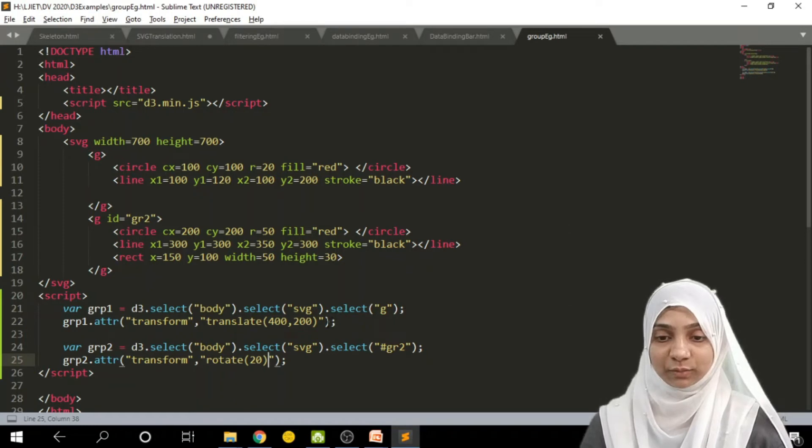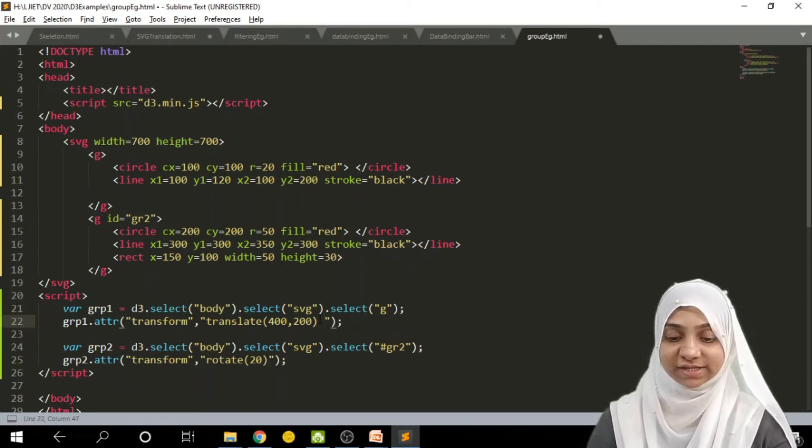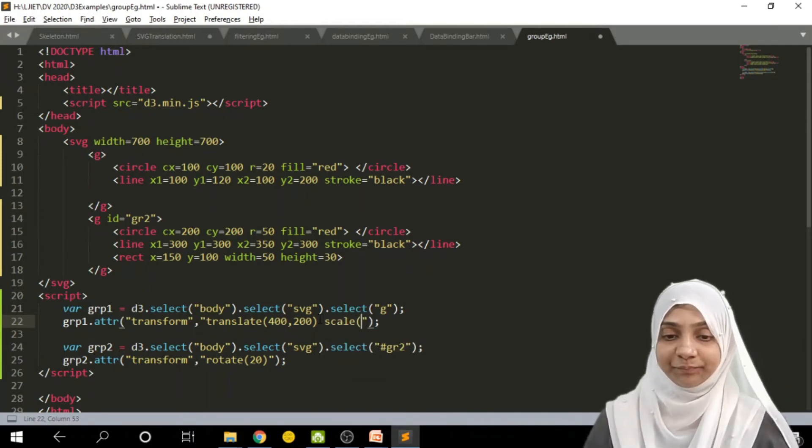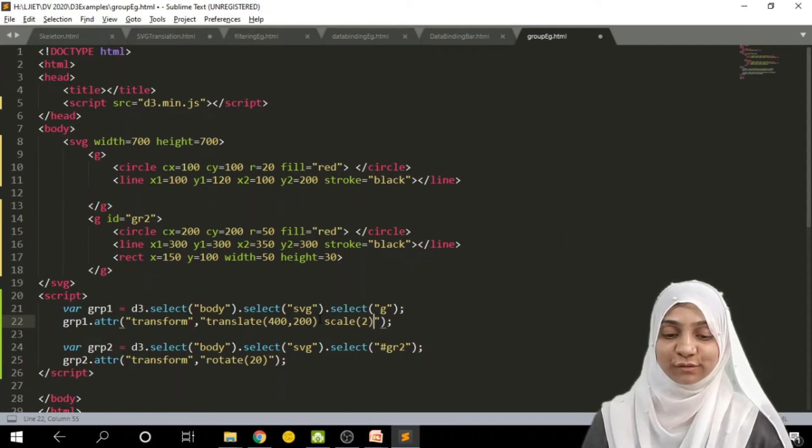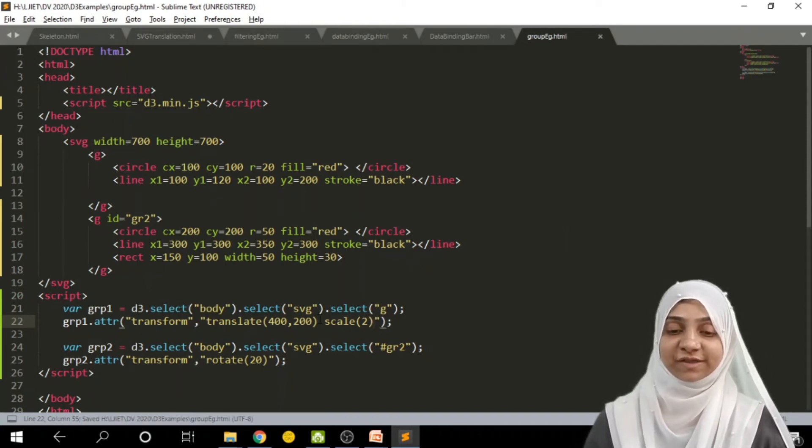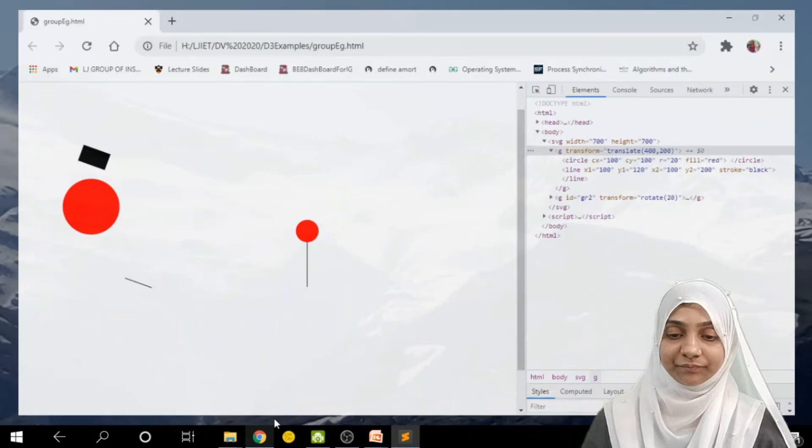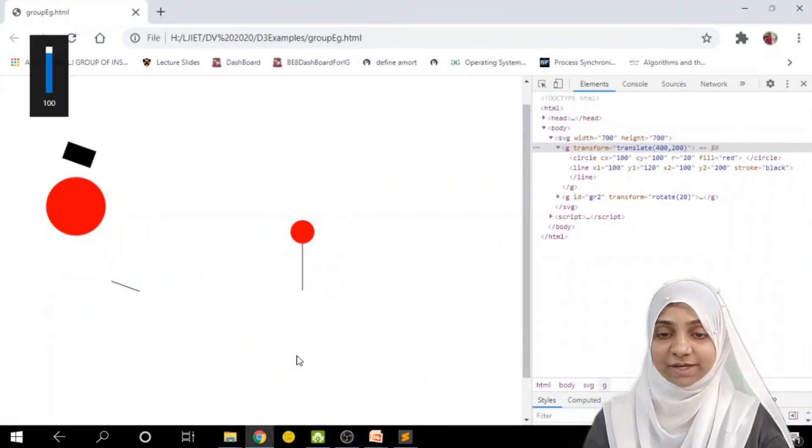So once they are translated, the group 1, we can translate and scale all together. So scaling first group by saying 0.5. Or say, I would like to double up its size. So scale of 2 will double up its size. Refreshing a page.